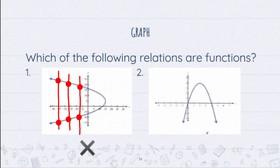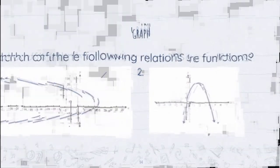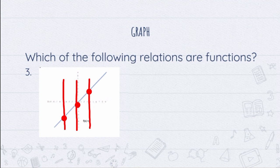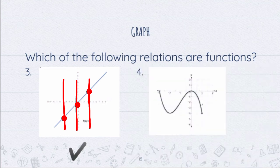Next is the graph in number 2. Placing vertical lines here, each vertical line intersects at only one point of the graph. Therefore, this is a function. We have here number 3 — placing vertical lines will only intersect at one point, so this is a function. We are now on number 4 — placing vertical lines here will only intersect at one point. Therefore, this is still a function.